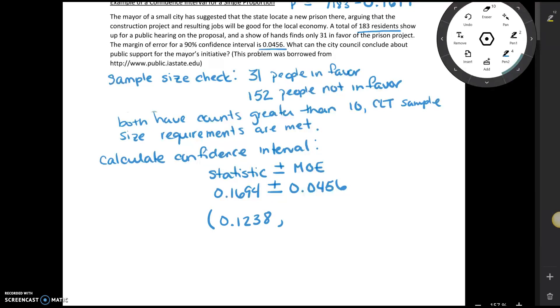To get the upper bound on the interval, we're going to take 0.1694 and add 0.0456, and so our upper bound is 0.215. So here's our confidence interval.